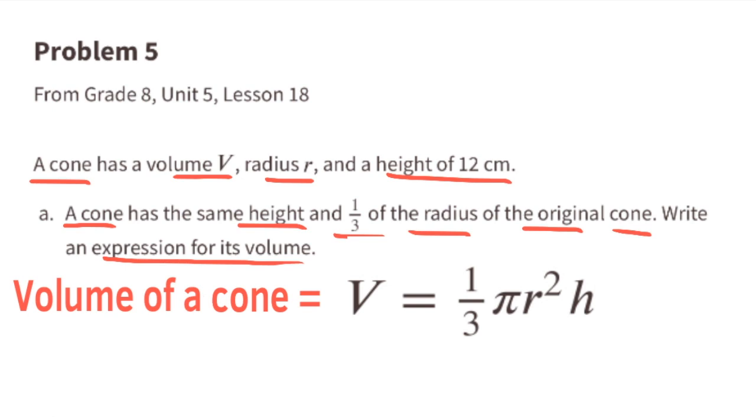In this problem there are two cones. There's the original cone and there's a cone that has the same height and one-third of the radius of the original cone. We can use this formula to help us. We can insert the one-third of the radius and we can substitute the h with the 12 centimeters for the height.